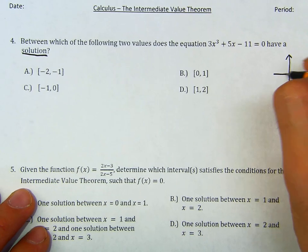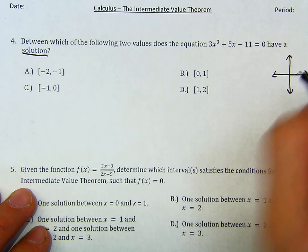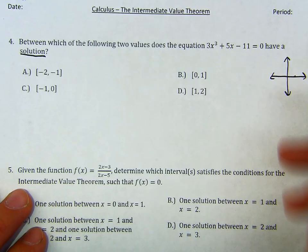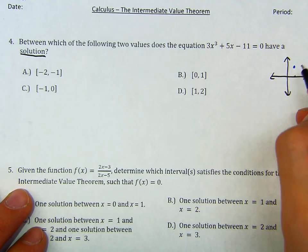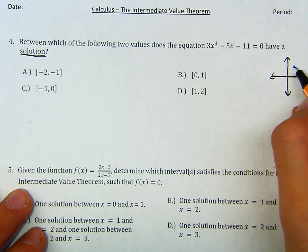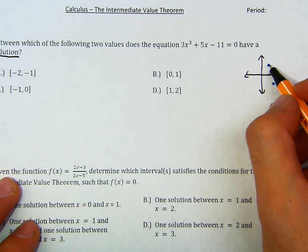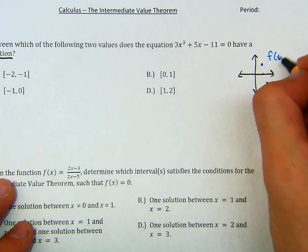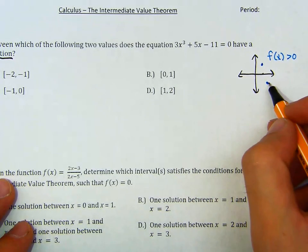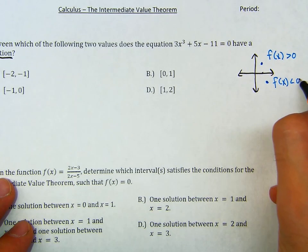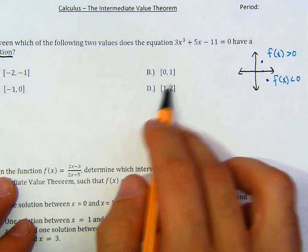You have to intersect the x-axis. And notice that if you have a continuous function, one of the points has to be above the x-axis and one of the other points has to be below the x-axis. If you're above the x-axis, f of x is greater than 0. If you're below the x-axis, f of x is less than 0. So, to solve this question,